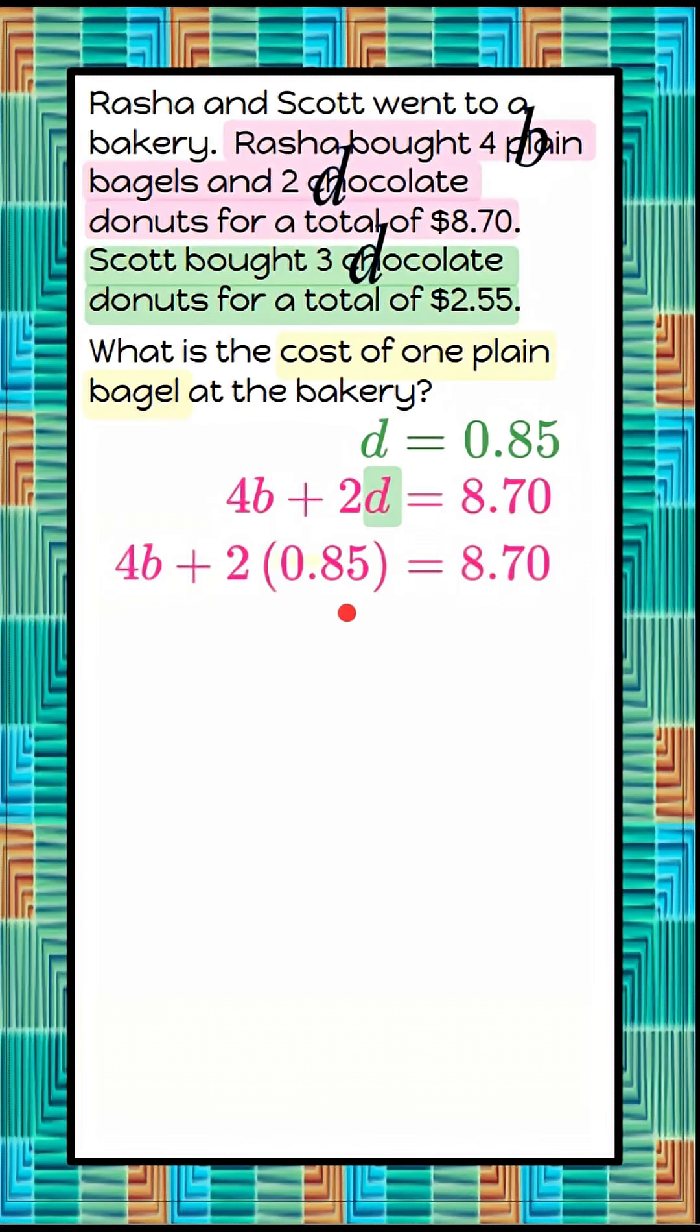So we'll do that math first. We'll multiply two times $0.85. So 4B plus $1.70, which is two donuts, is equal to $8.70.